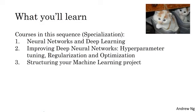In the third course, which is just two weeks, you learn how to structure your machine learning project. It turns out that the strategy for building a machine learning system has changed in the era of deep learning. So for example, the way you split your data into train development or dev, also called holdout cross validation set, and test sets, has changed in the era of deep learning. So what are the new best practices for doing that? And what if your training set and your test set come from different distributions? That's happening a lot more in the era of deep learning. So how do you deal with that?